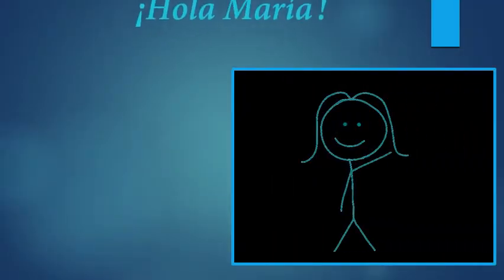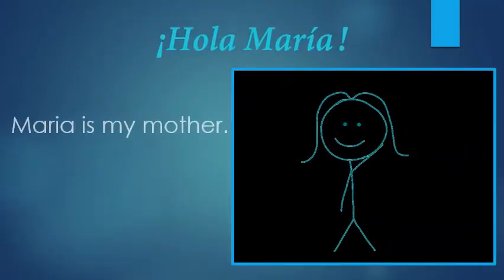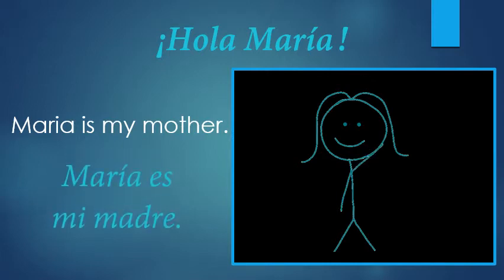This is Maria. How would you say 'Maria is my mother'? Well, mother — we have a couple of words: madre, mamá, mami. Let's just stick with madre for now. My — well, that's mi. And 'is' — you have to decide: is it permanent or temporary? Hopefully your mother is permanent, so you're going to use ser. The third person singular form of ser is es. So you would say: Maria es mi madre.